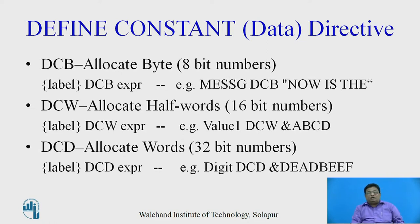Similarly, to allocate 16-bit memory for a particular constant, the directive provided is DCW. The DCW directive allocates half-words of memory space, that is 16-bit. The syntax is: label, DCW, expression. The example shown is: value1 DCW 0xABCD. Value1 will be initialized with the 16-bit value 0xABCD, and value1 holds the starting address of this 16-bit value.